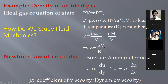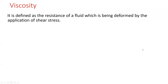Newton's law of viscosity states that shear stress is directly proportional to the rate of strain — or the rate of change of velocity gradient — with the coefficient of proportionality known as the coefficient of viscosity or dynamic viscosity. Viscosity can be defined as the resistance of a fluid being deformed by the application of stress. When a fluid changes its structure under shear stress, that resistance is known as viscosity.